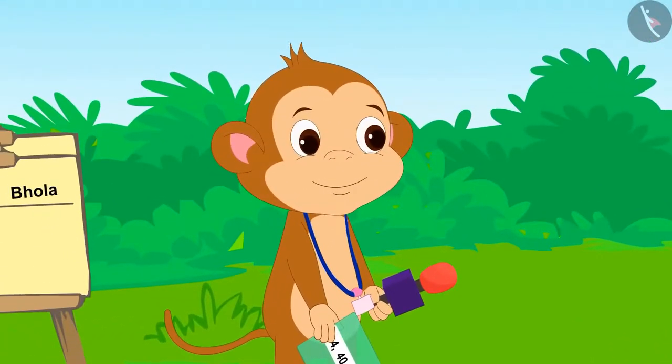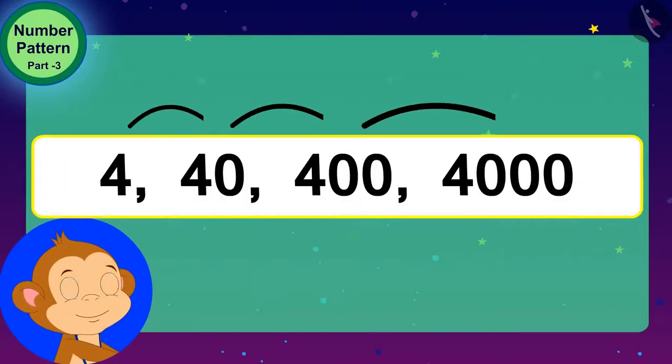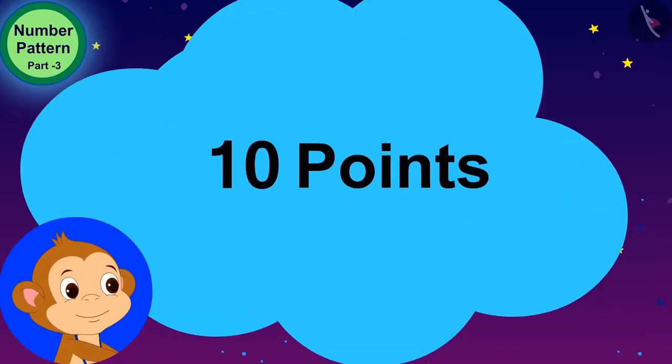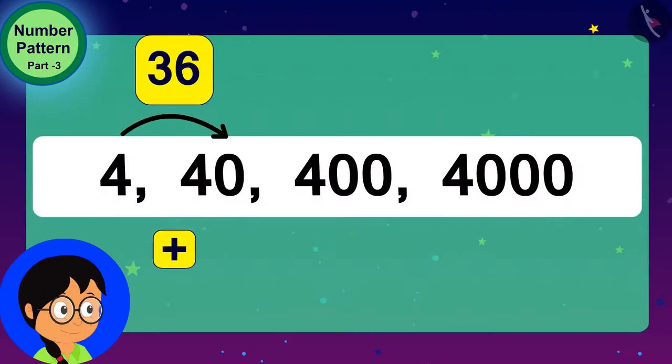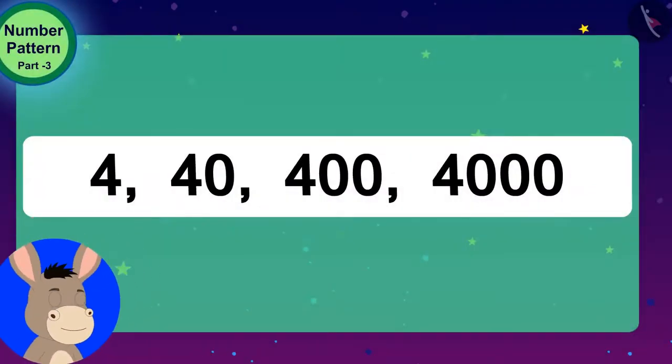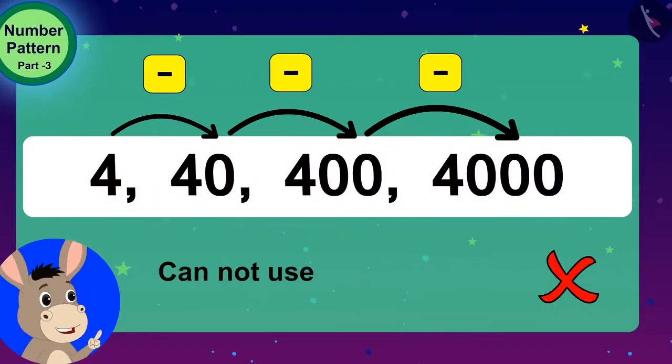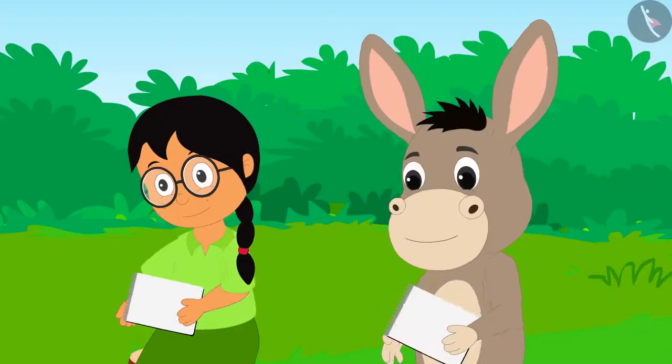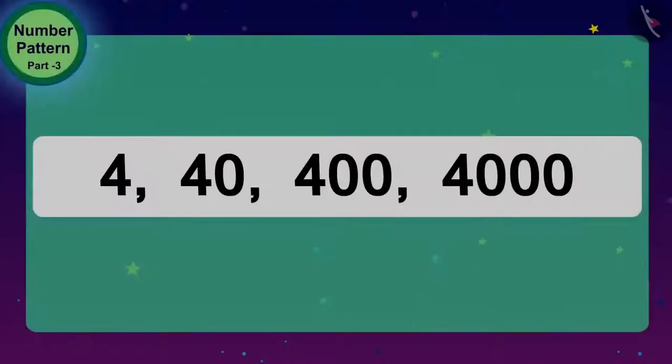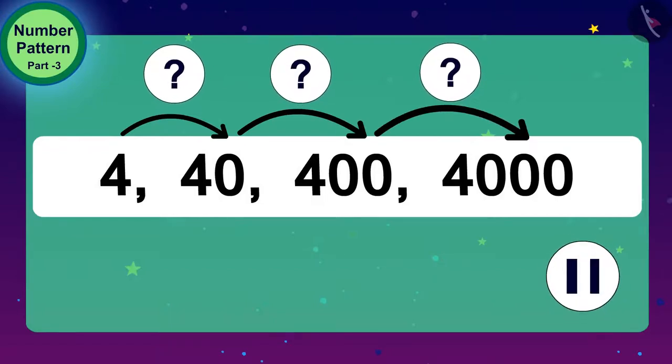Now, Babban showed the contestants the second number pattern. Babban said, you have to find the rule of this number pattern. Whoever finds it first will get 10 points. Meenu tried to use the addition process. In this pattern, no rules can be made using the process of addition because different numbers are being added each time. Bhoala tried to use the subtraction process. Here the numbers are in increasing order, so I can't use subtraction here. Bhoala and Meenu were in deep thought. Children, can you find the rule of this number pattern? If you want, you can stop the video and find the answer.